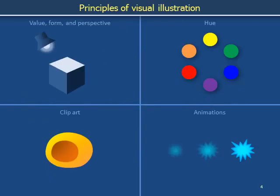In the previous two slides we described the arrangement of highlights, midtones, and shadows on a two-dimensional plane to represent the three-dimensional relationship between forms, optics, and viewer. In the next slide we explore color.